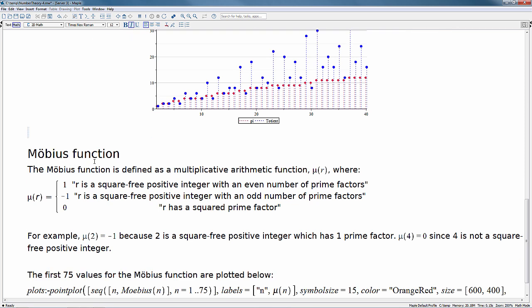Now the Mobius function is a multiplicative arithmetic function, mu of r, where the following is true. So mu of r is equal to 1 if r is a square free positive integer with an even number of prime factors, minus 1 if r is a square free positive integer with an odd number of prime factors, and 0, where r has a squared prime factor.